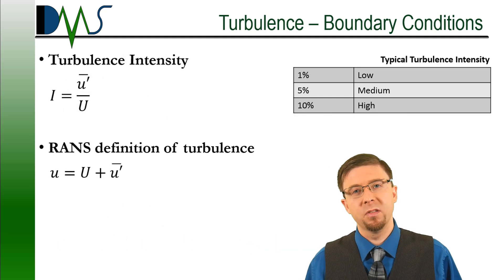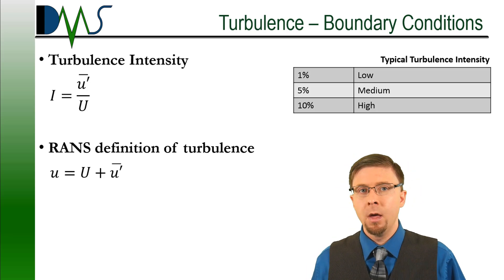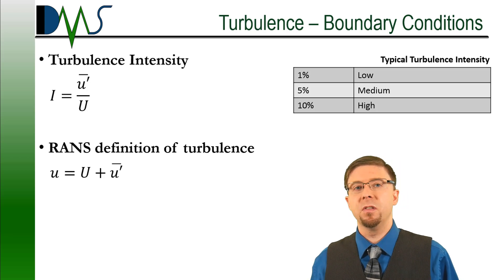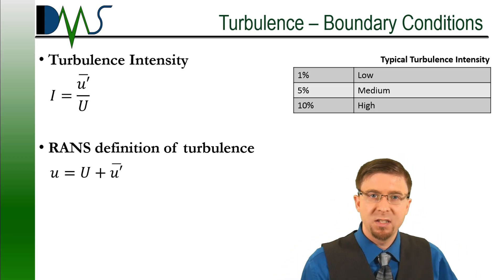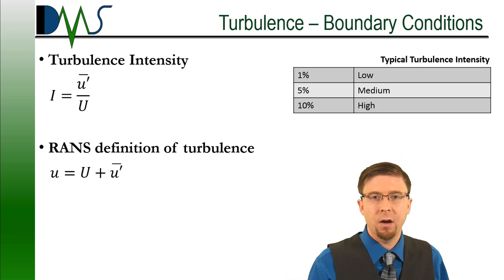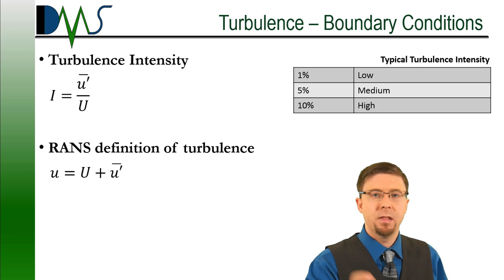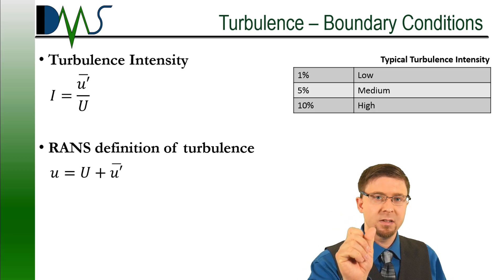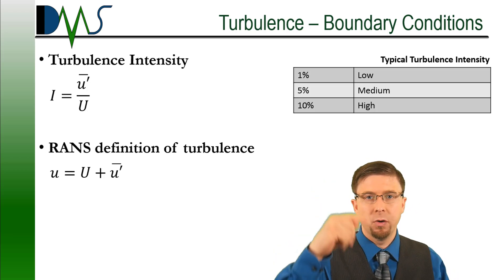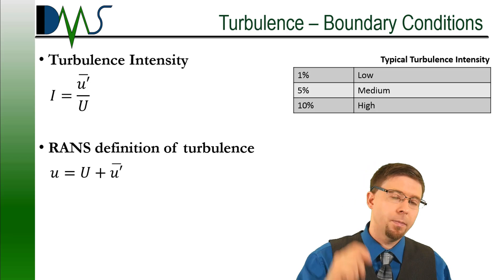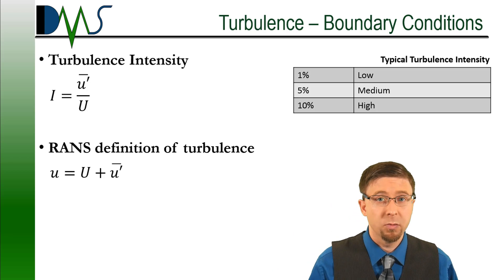So those are your general viscosity ratios to keep an idea of. But most turbulence models are two-equation models, which means we need a second boundary condition. Our second boundary condition is normally the turbulence intensity. Remember that in our classic RANS definition of turbulence, we take our velocity and we separate it out into two halves. We've got the steady velocity, and then we have the turbulent varying velocity element. Well, the turbulence intensity is just the ratio of those two components. It's the turbulent velocity divided by the steady velocity. And we express this normally as a percentage.